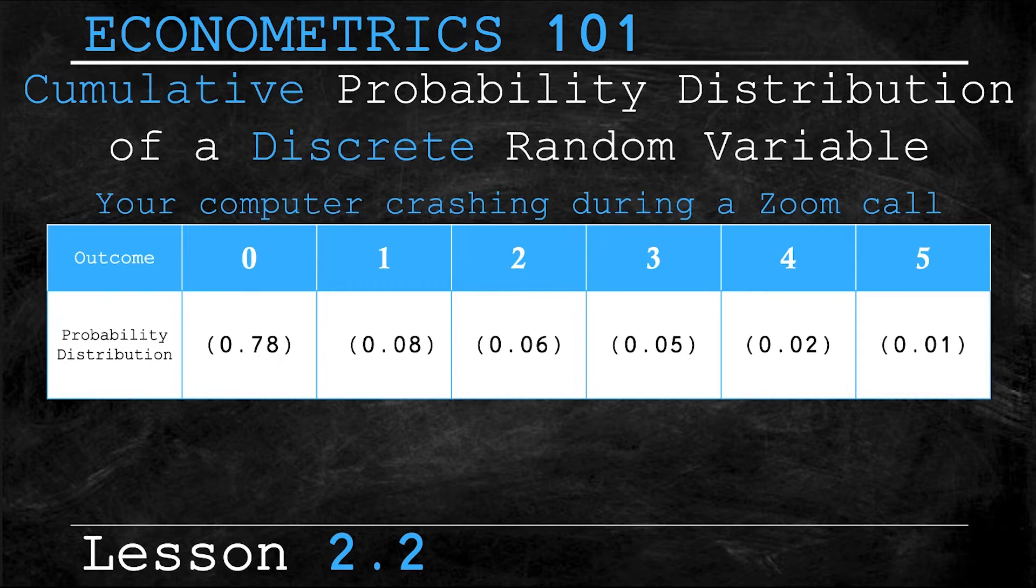Your computer can't crash less than 0 times, it can't crash 3.7 times, and it can't crash a sixth time. The second row shows each of the associated probabilities for the six different outcomes. So with this information, we can simply plug the values into our new equation and calculate the expectation of y, also known as μ_y.